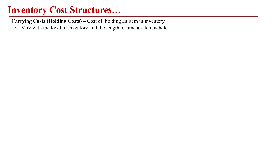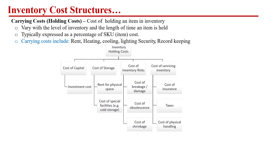The next cost is the carrying cost or holding cost. This is the cost incurred when we keep a particular SKU in our warehouse or storage area. It varies with the level of inventory of that SKU and the length of time the item is held. As the inventory level and storage duration increase, the carrying or holding cost increases. Typically, it is expressed as a percentage of the item cost — for example, if the product cost per unit is five dollars, then five or fifteen percent of this item cost may be the carrying cost.